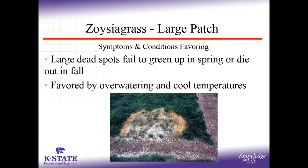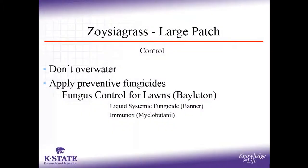Large patch has the same sneaky timing as spring dead spot — not visible until spring. It's favored by over-watering and cool temperatures; it moves with water, so over-irrigation during fall dormancy can create perfect stripes of disease the following spring. Don't over-water. Balan preventatively is the best approach; Banner and myclobutanil also work. The theme for disease control: preventatively treat, don't over-water, water at the right times, mow properly, improve airflow, and understand that preventative fungicides work better than curative ones.